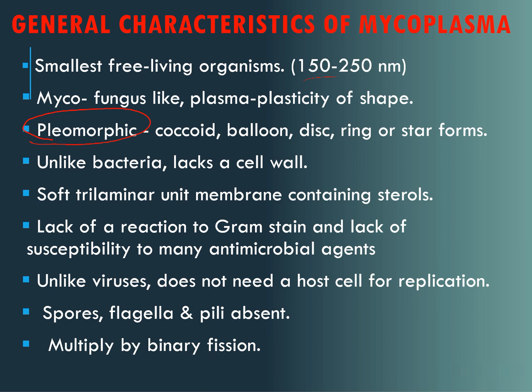They can exist in coccoid, balloon, disc, ring or star shapes — different types of shapes. They are different from bacteria because they don't have a cell wall. They have a plasma membrane which is trilaminar and it is unique because it contains sterols.